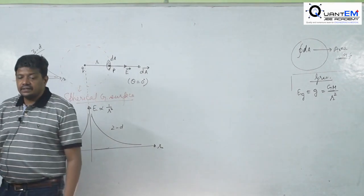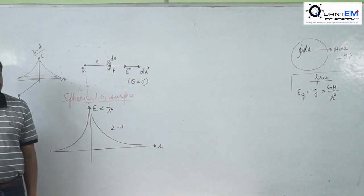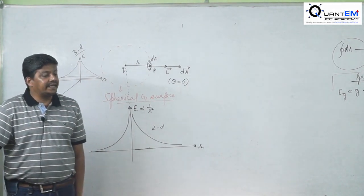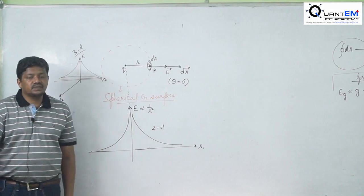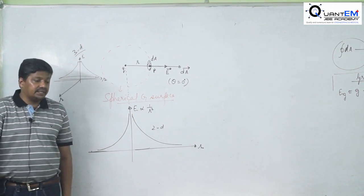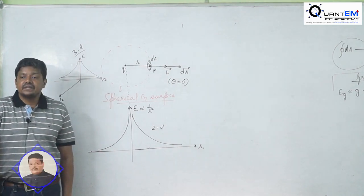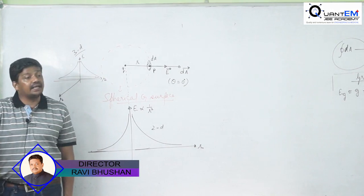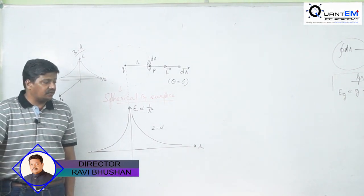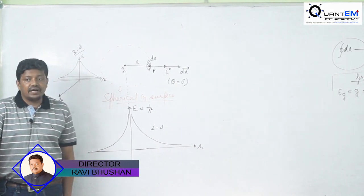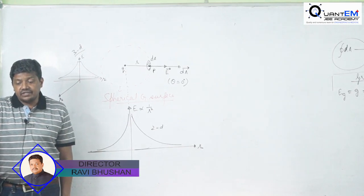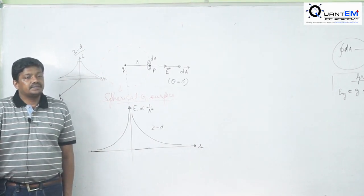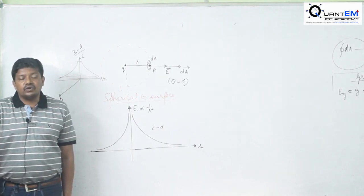Next: electric field intensity inside and outside a charged spherical shell of radius R, charged Q, with uniform charge density. The charge is uniformly distributed on the shell surface. Inside the shell, as previously explained, the charge is zero — the shell is externally charged.